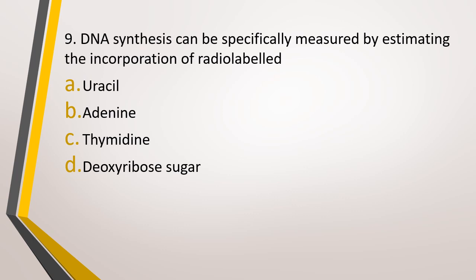Question number 9. DNA synthesis can be specifically measured by estimating the incorporation of radio-labeled, which of the following in radio-labeled form is used to estimate DNA synthesis? Option A: uracil, option B: adenine, option C: thymine, or option D: deoxyribose sugar. The correct answer is thymidine. Radio-labeled thymidine is used for estimating the amount of DNA synthesized.